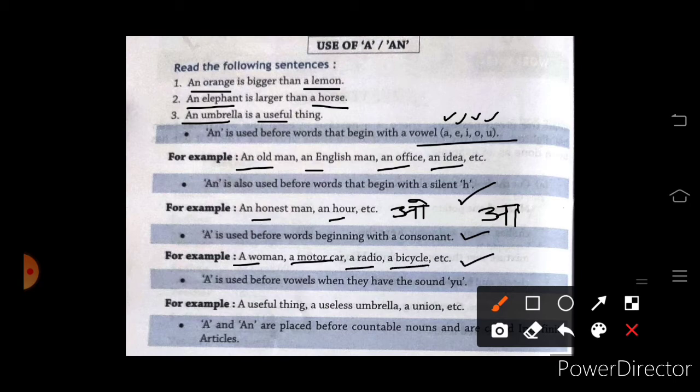Next one, A is used before vowels when they have the sound y. Like useful. Sound relates with y. Y is vyanjan in Hindi, consonant. Same as useful and the last one, union.